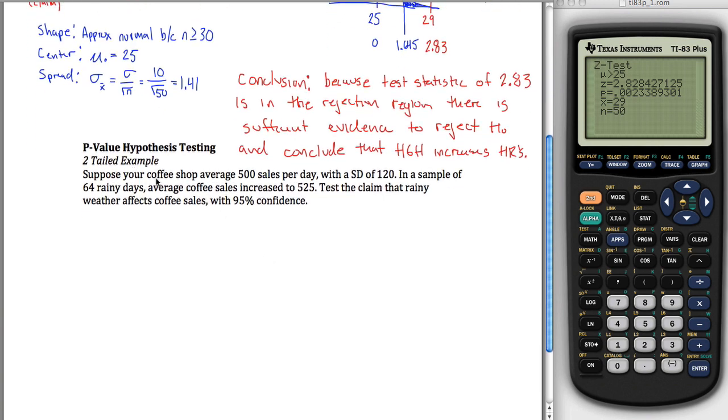I've got a different example here. Now we're talking about, you own a coffee shop, you sell 500 coffees or somethings per day with a standard deviation of 120, then we get a sample of 64 rainy days, and on those days the coffee sales increased to 525. And we want to test the claim that rainy weather affects coffee sales with 95% confidence. So kind of like we did in the last problem, we'll go through and find all the pertinent information. So this 500 here is talking about a population average, but instead of using mu, we'll use mu not because we want to say mu for something else later. The standard deviation of 120, note that that's talking about the population standard deviation if you read this. It's not the standard deviation for the sample, but for all coffee sales. So this is sigma, that's equal to 120. We have a sample of 64 rainy days, so that's our value for n. And our sample average, how much we sell on those days is 525. That's x bar.